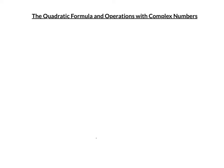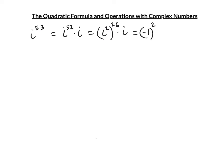For i⁵³: it's odd, so i⁵² · i = (i²)²⁶ · i = (-1)²⁶ · i. Since 26 is even, (-1)²⁶ = 1, so i⁵³ = i. For i⁷⁵: i⁷⁴ · i = (i²)³⁷ · i = (-1)³⁷ · i. Since 37 is odd, (-1)³⁷ = -1, so i⁷⁵ = -i.